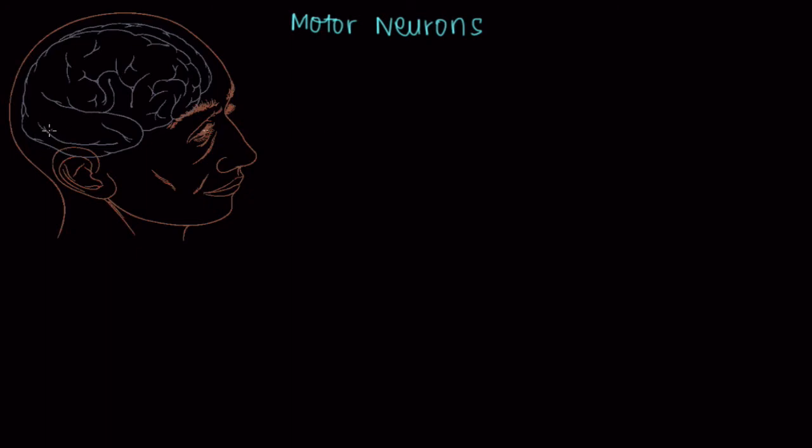So let's start from the top. In the brain we have what's called an upper motor neuron. An upper motor neuron sends a signal over to a lower motor neuron.